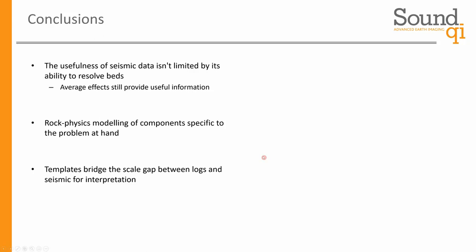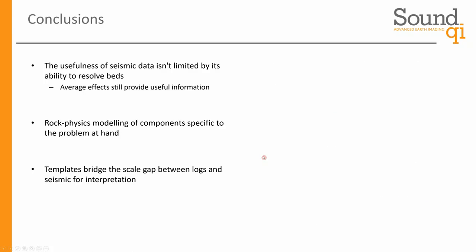The main point is that the usefulness of seismic isn't limited by its ability to resolve beds. Just because we can't individually resolve and identify the properties of a thin bed doesn't mean we can't infer information about the presence of those beds and their properties. The average effect that unresolvable layers have on the total seismic response is still very useful information. To extract that information, we need rock physics modeling of the different components — reservoir and non-reservoir — specific to the problem at hand, whether it's coal, shale, or other lithologies. Building these templates helps bridge the scale gap between seismic observations and log-scale understanding. I'd like to thank Bridgeport and Bengal for letting us show some of the data examples, as well as some other anonymous companies. Thank you for your attention.